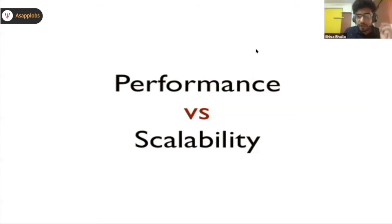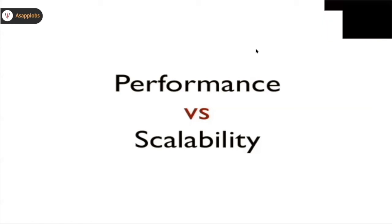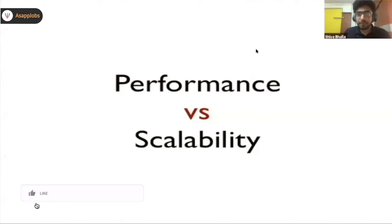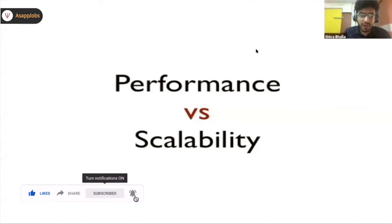When is your system said to have a scalability problem? A performance problem occurs when for one user your system is not doing well. But there are scenarios where for one user your system is doing well, but when a huge load of users comes to use your system, it fails — the latency shoots up. That's where your system is said to have a scalability issue.